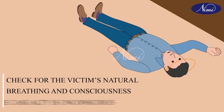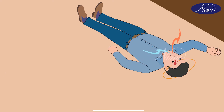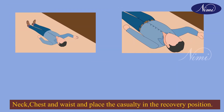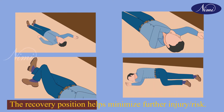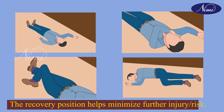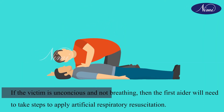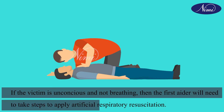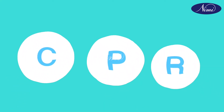We have to check for the patient's natural breathing and consciousness. If the victim is unconscious but breathing, then loosen the clothes near the neck, chest and waist, and place the victim in the recovery position. The recovery position will help to minimize further injury or risk. But if the patient is unconscious and also not breathing, the first aider needs to start the steps to apply artificial respiratory resuscitation — CPR.